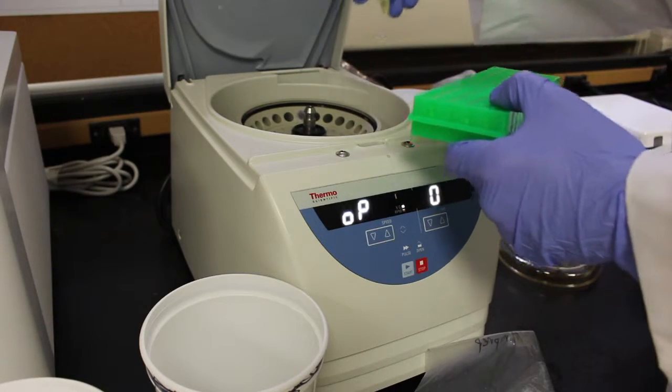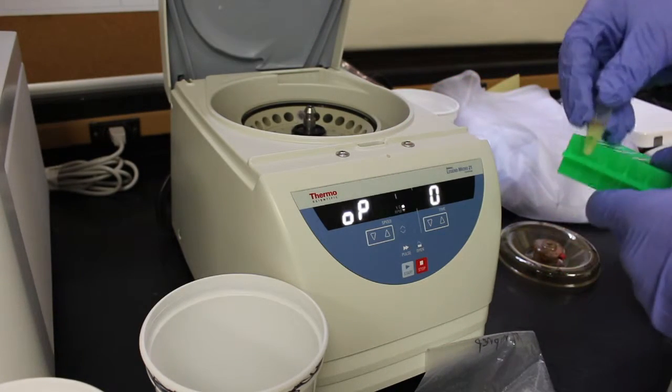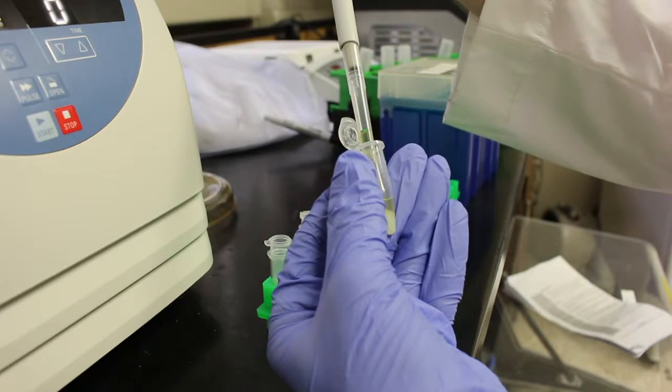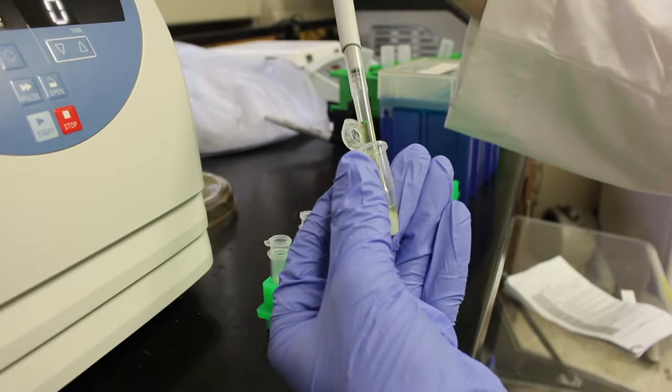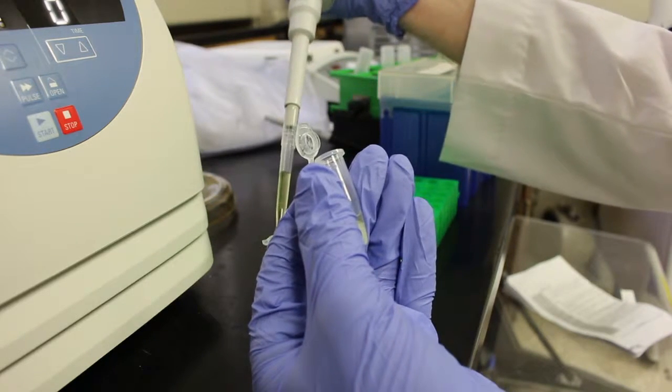Centrifuge the tubes at 15,000 g's for 2 minutes and add the supernatant to the Zymo Spin 2N column. Remember to label the collection tubes before transferring the DNA.